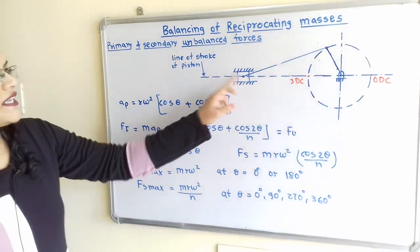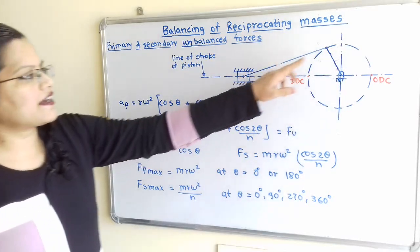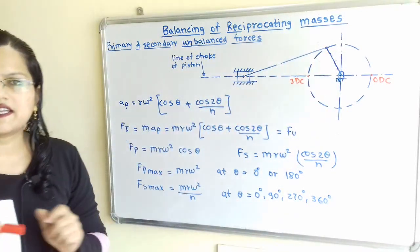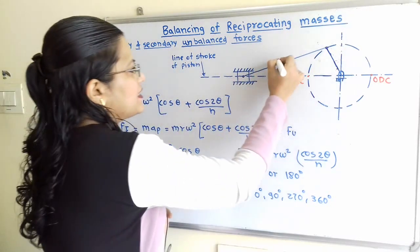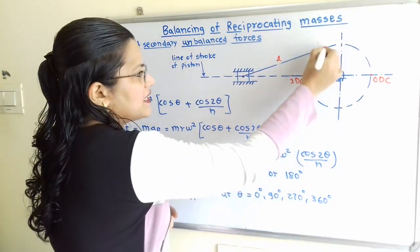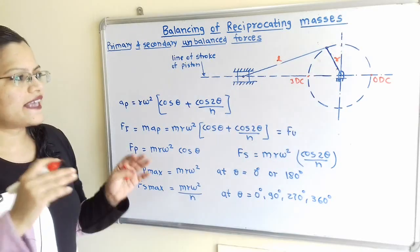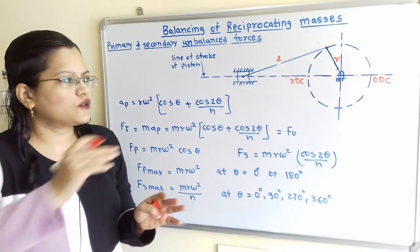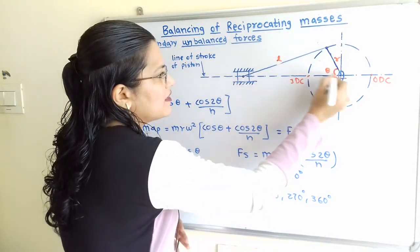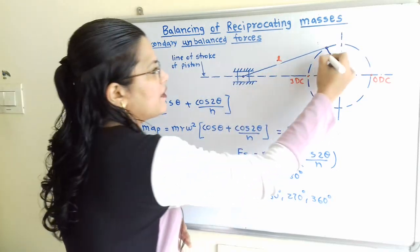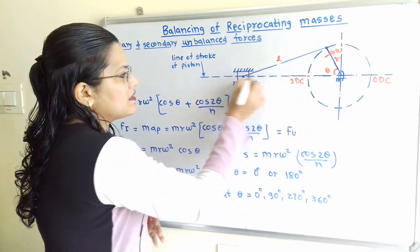This is the piston-cylinder arrangement. The piston is connected to the crank through the connecting rod. The length of the connecting rod is L and the radius of the crank is R. When the crank rotates through an angle theta from the inner dead center with angular velocity omega, the piston reciprocates.